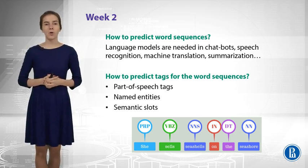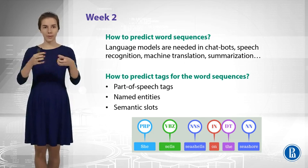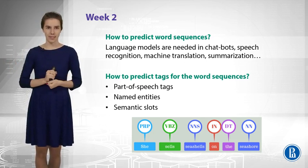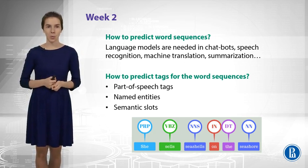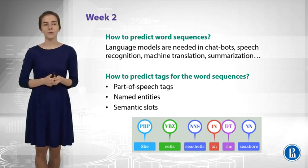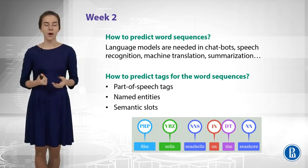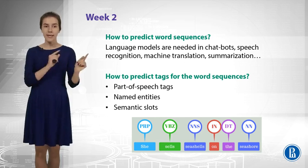Another important task is called sequence tagging. This is the task when you have a sequence of words and you need to predict tags for each of the words in this sequence. For example, it could be part-of-speech tags — you need to know that some words are nouns, some words are verbs, and so on. Another task would be to find named entities, which is really useful. For example, you can find names of cities and use them as features for text classification.